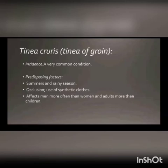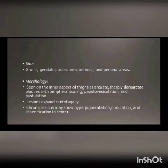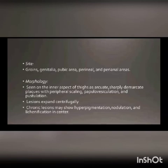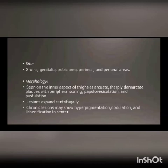Tinea cruris usually occurs in adults. The affected sites are the groins, genitalia, pubic area, perineal, and perianal regions. Starting in the groin, it may spread to nearby areas and up to the perianal region, and sometimes spread upward to involve tinea corporis. The morphology is seen on the inner aspect of the thigh as arcuate, sharply demarcated plaques with peripheral scaling, papulovesiculation, and pustulation. Lesions expand centrifugally — away from the center.